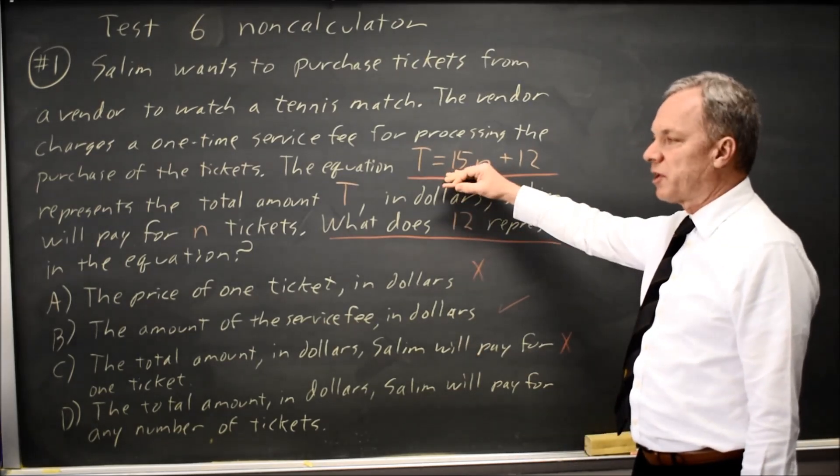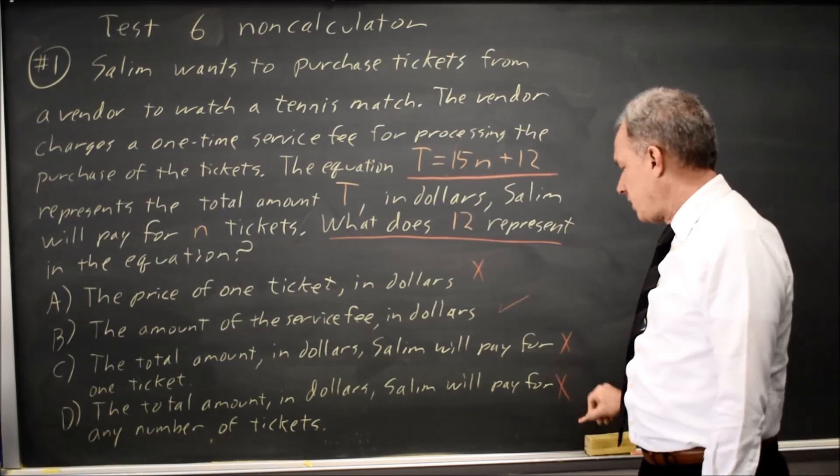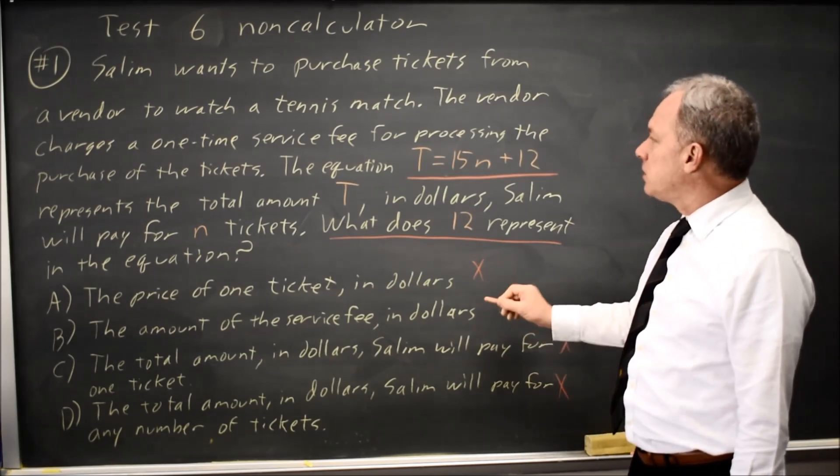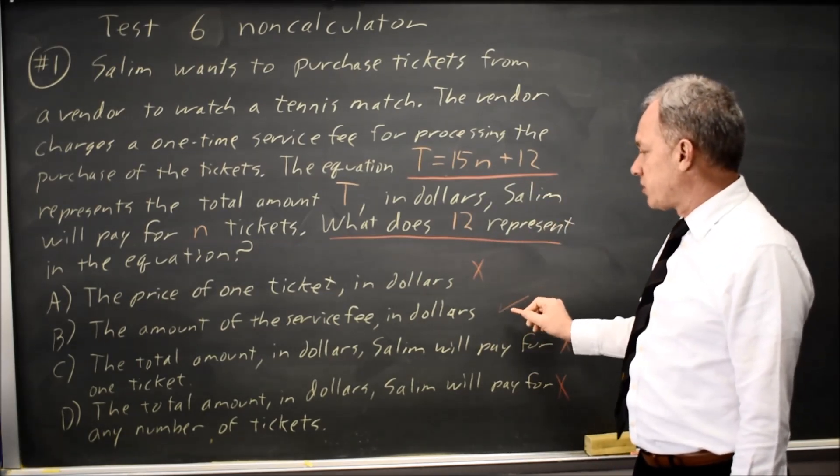Again, since that's not correct for N equals 1, that's not correct for any number. So the 12 is the service fee in dollars.